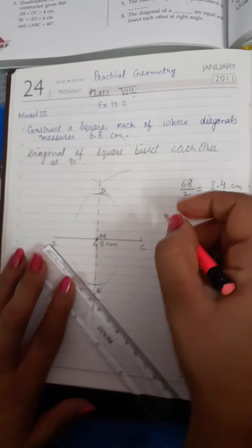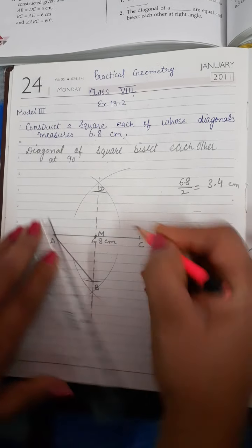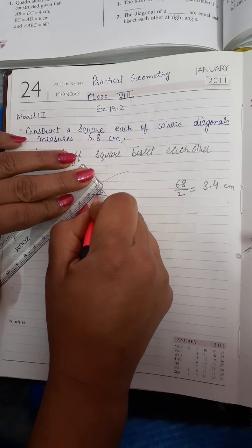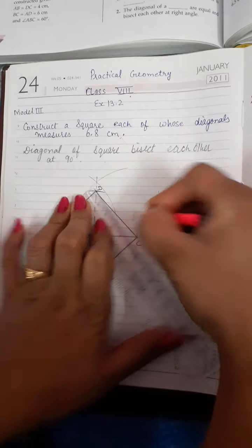A, we have joined B, C, A, D, D, C. So this is our point. Square construction is complete when we have diagonal given.